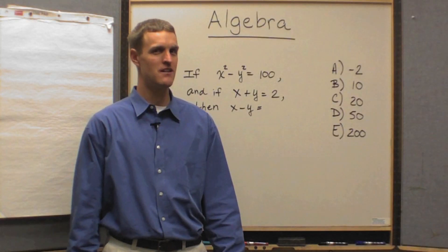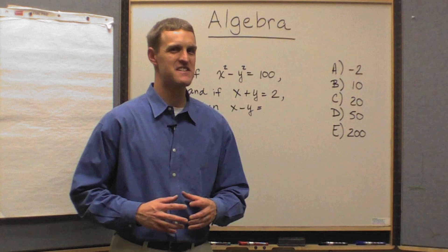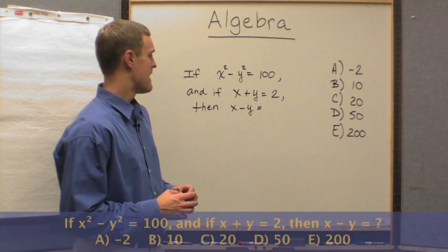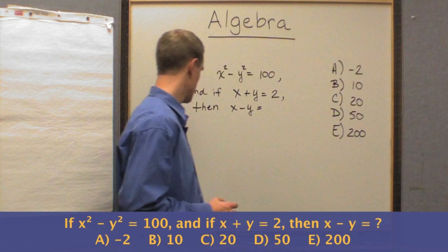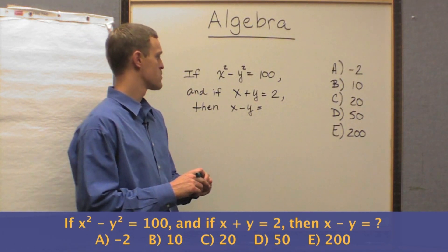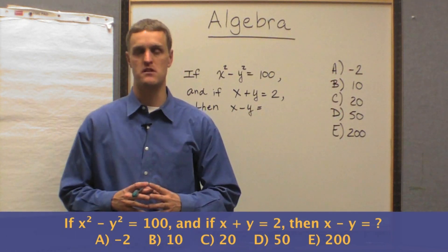All right, how'd you do? Hopefully you recognized something very important. Maybe because I tipped you off to it, but maybe because you're starting to recognize this. And that is, you look at a question like this. I'll use green this time. If x squared minus y squared equals 100, and if x plus y equals 2, then x minus y equals what? And we have our answer choices.